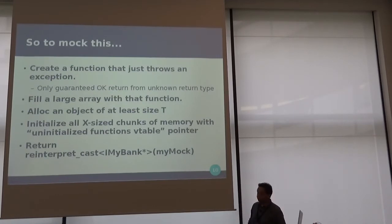So let's make a mock object. We create a function that throws an exception, because we don't know what functions are going to end up there, and the only way we can exit them reliably, especially on Windows, is by throwing an exception. We fill a large array, large enough, with just that function, and then we fill an object of at least the size of the object with just pointers to the Vtable. We reinterpret cast that to the right type, and we say good luck with that. And now you can call any virtual function on that, and it will throw the exception. That works fine.